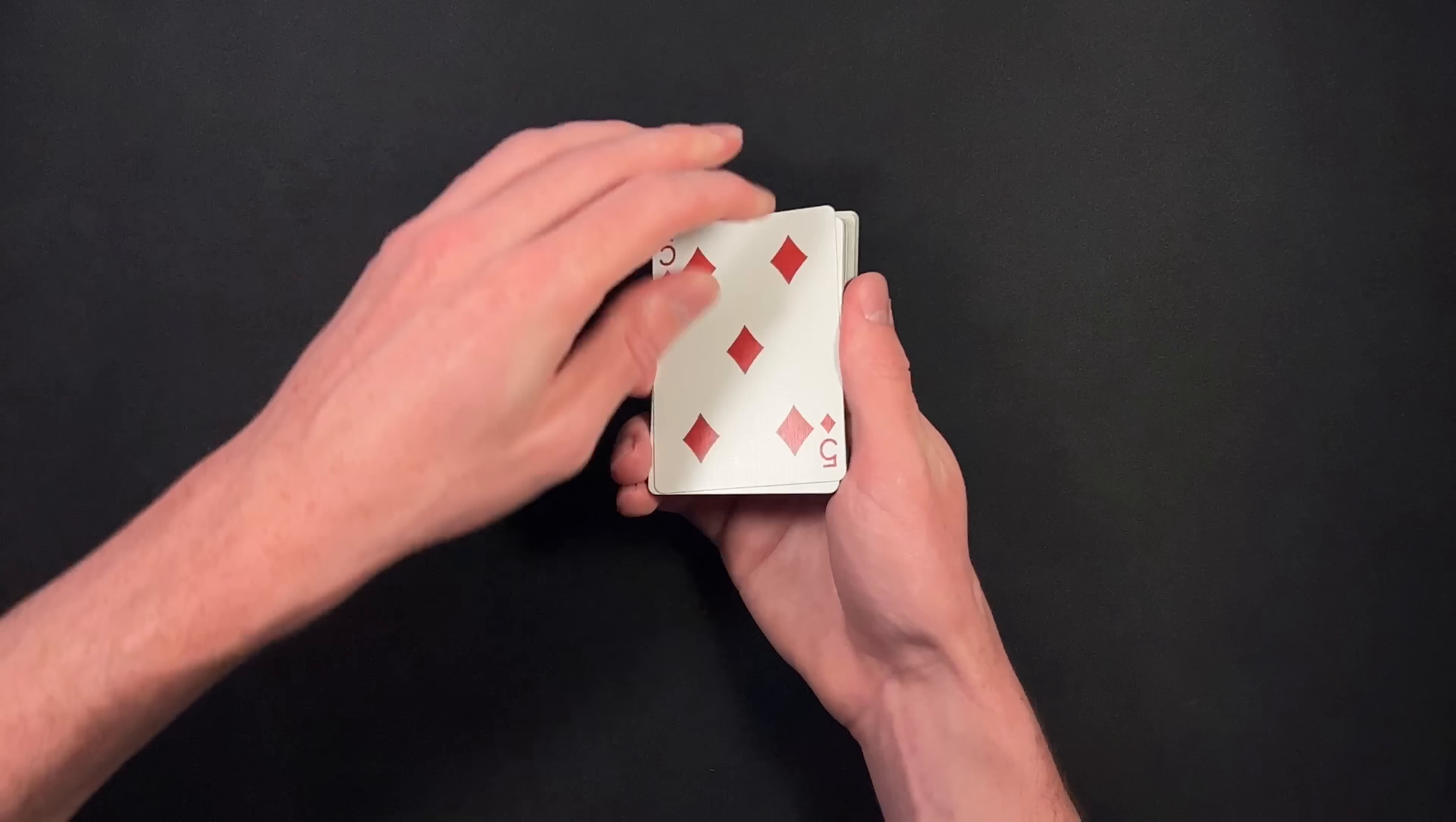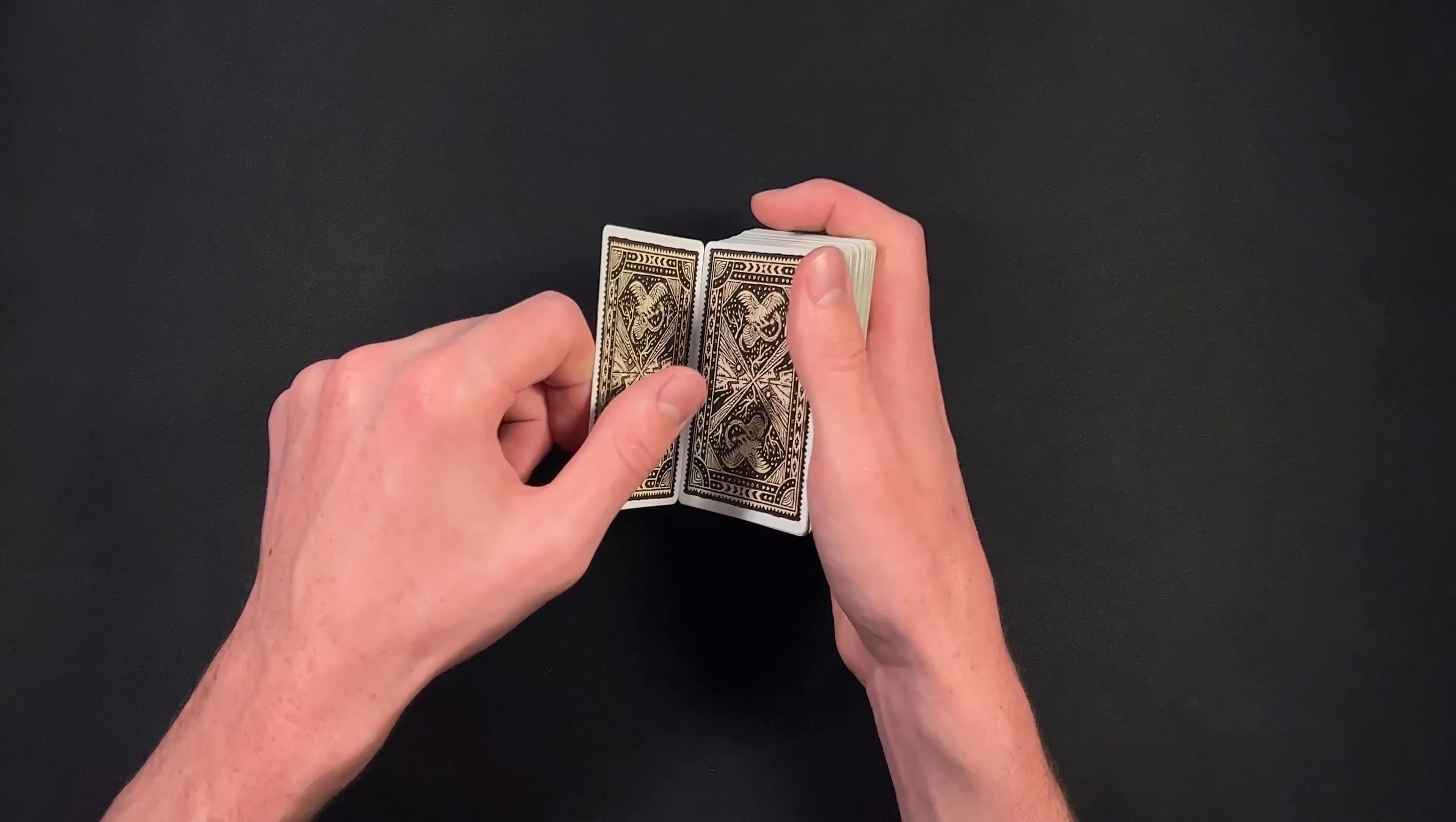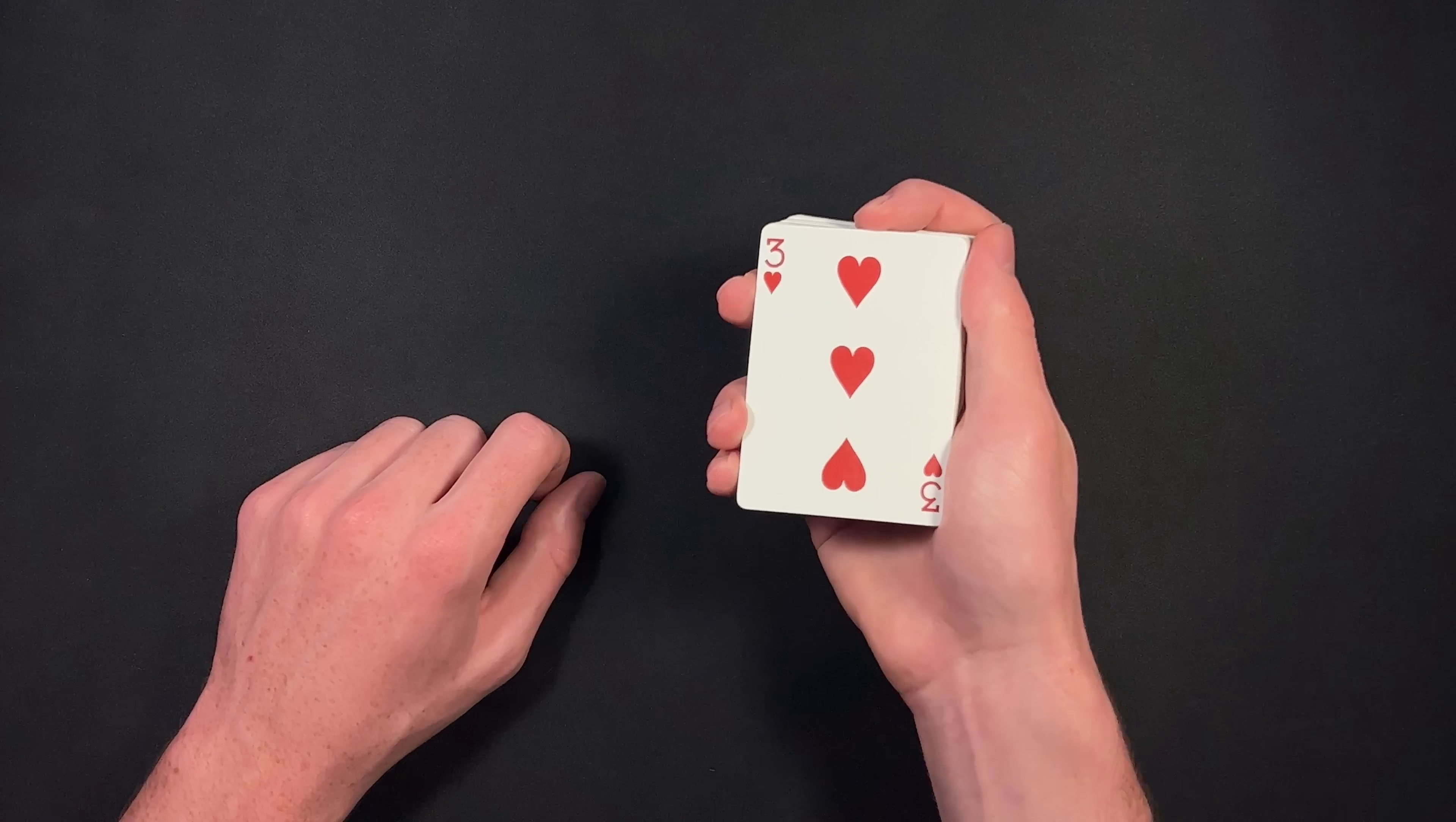At this point, you're going to show them the bottom card. You're going to ask them, is this your card? They're obviously going to say no. Turn the deck over. Now you're going to turn over the very top card, which remember is this random card. You're going to ask them, is the three of hearts your selection? They're also going to say no.